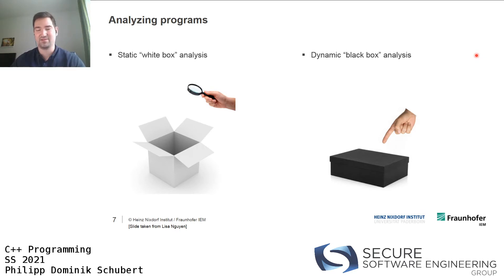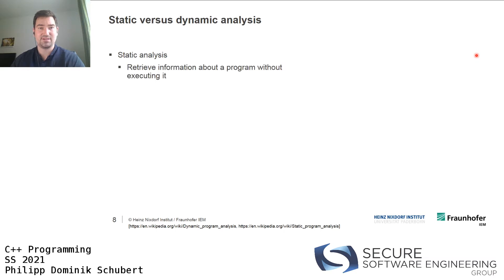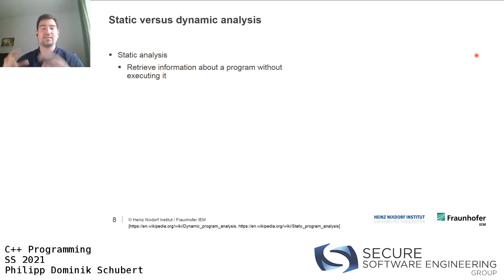In black-box analysis you only have a binary - no source code, no documentation, no configuration files - and you have to figure out what the program does and find interesting properties of its behavior. In static analysis, you retrieve information about a program without executing it - you're only looking at the program and trying to figure out what it does.